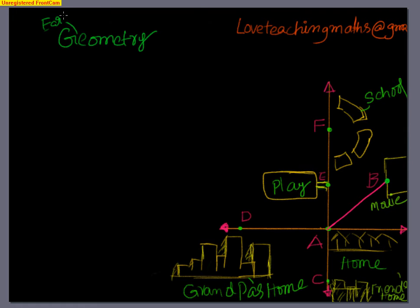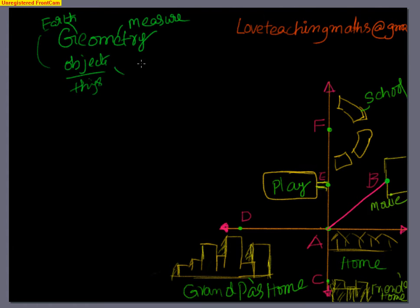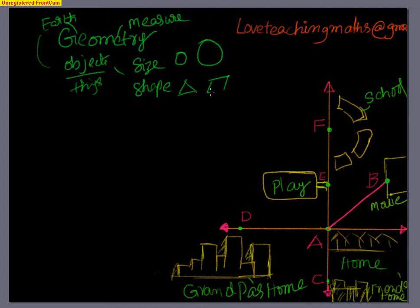Geo means Earth and metry means measurement. So geometry is the measurement of Earth, and we know Earth is made up of objects — or in layman's language, things. Things have size and shape, like a small circle or a big circle, different shapes like a triangle, a quadrilateral, a cube, or a pyramid. So that's about geometry.